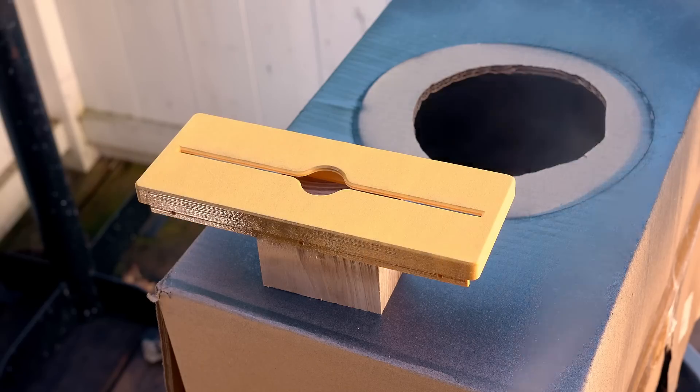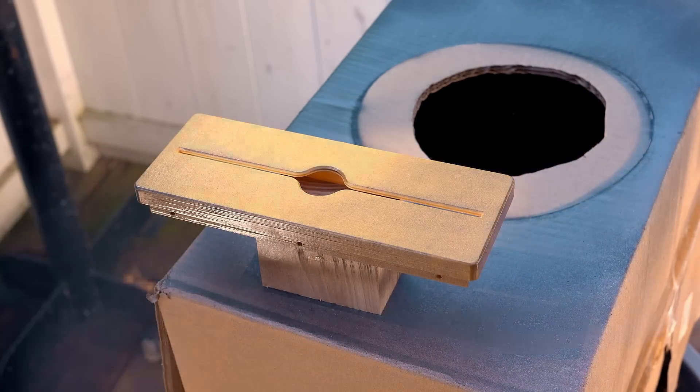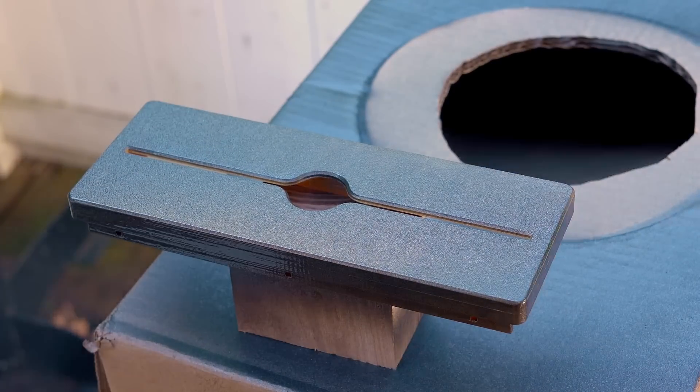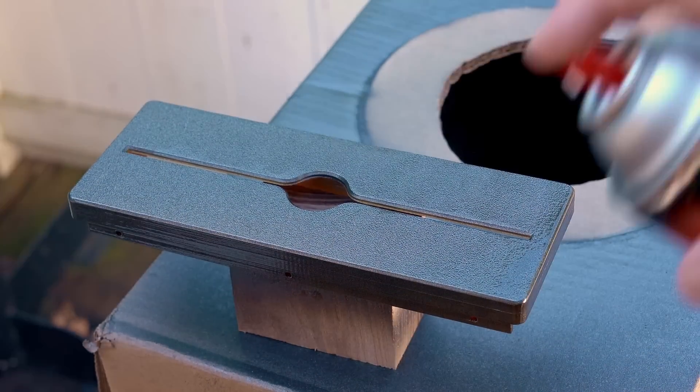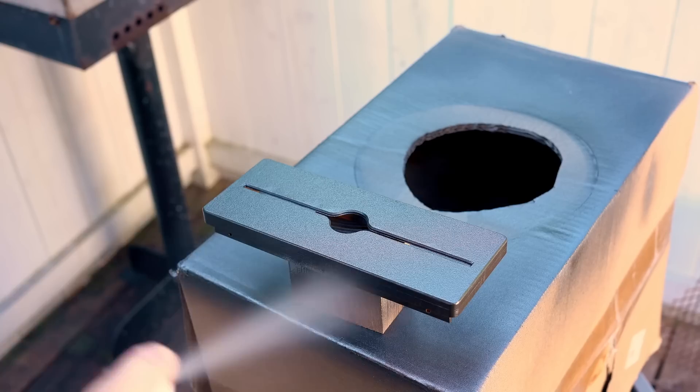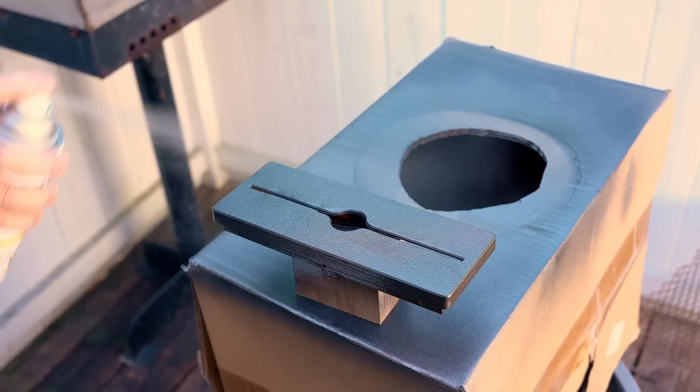And then I took all of the outside parts that you can see, and I sprayed them with this metallic black paint. Once again, this was a bit of a test to see how the plastic would react to that paint. And I can say, once again, that it held up just fine.